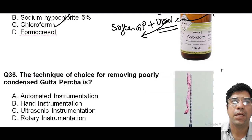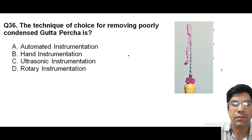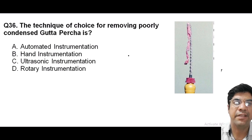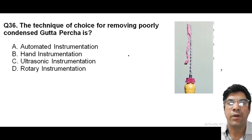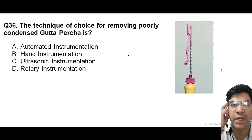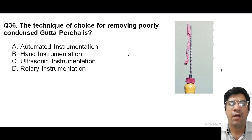The technique of choice for removing poorly condensed gutta-percha is hand instrumentation. When gutta-percha is poorly condensed or compacted within the canal, it may be removed for re-treatment using manual endodontic instruments like H-files and reamers. Hand instrumentation is the preferred technique — the flexibility and tactile control offered by hand files allows for removal of inadequately compacted gutta-percha.